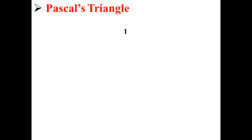Let's talk about Pascal's triangle. We start with the value 1, and below it we have two 1's. Each of those 1's comes from the sum of the terms above it. Here we have invisible zeros, so we continue with the 1's.